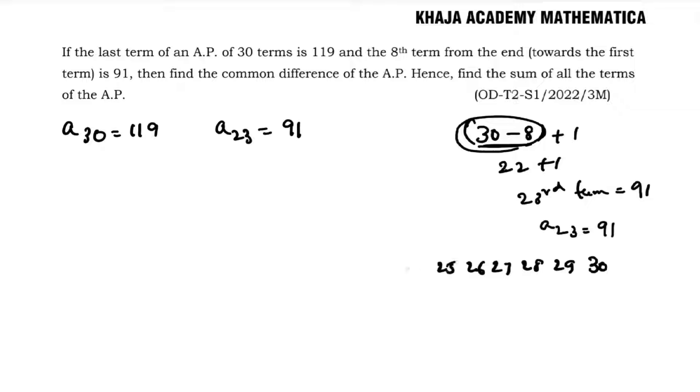27, 26, 25, 24, 23. See, this is first term, second, third, fourth, fifth, sixth, seventh, eighth. So the 8th term is the 23rd term. Subtract 8 and then add 1. So in this way we can find the term from the end.